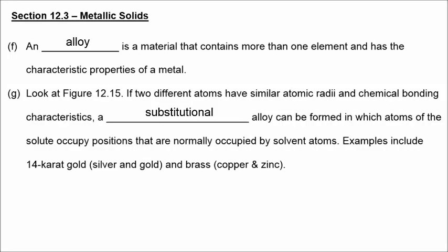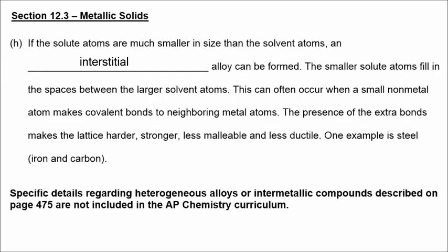The alloy on the left, which contains two different metals that are about the same size, is called a substitutional alloy. And the alloy on the right, which contains one atom that's much smaller and kind of fits in between the spaces of another atom that's larger, that's called an interstitial alloy. Answering letter G, a substitutional alloy can be formed in which the atoms of the solute occupy positions that are normally occupied by the solvent. In the case of silver and gold, or copper and zinc, one element is substituting for another, but they're about the same size, the same radii. But if the solute atoms are much smaller in size than the solvent, then interstitial alloys can be formed. The smaller atoms fill in the spaces between the larger atoms.